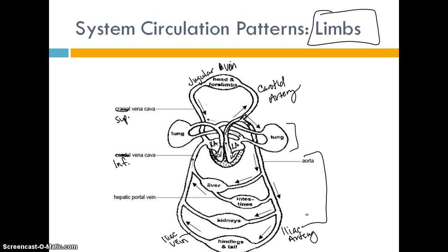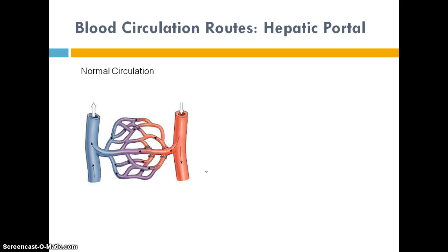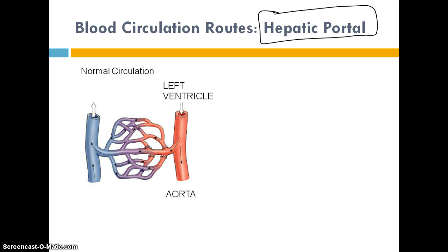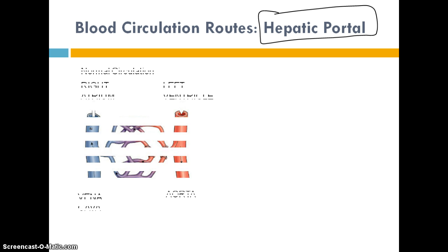Now let's look at what happens in the trunk of the body with systemic circulation patterns — specifically hepatic portal circulation, which gets a little tricky. In a regular circulation pattern, we have a major artery from the aorta and a major vein draining into the right atrium, with one capillary bed in between for diffusion. For hepatic portal circulation, you have two capillary beds instead of one.